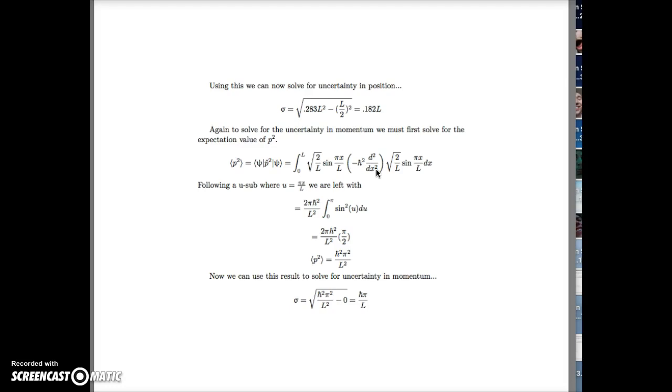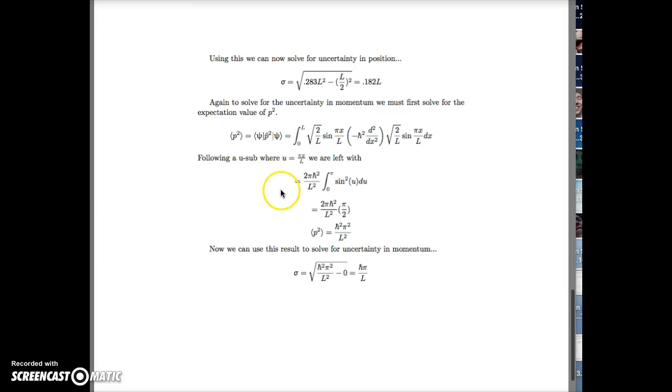Again, to solve for the uncertainty in momentum, we must first solve for the expectation value of p squared. Following the same process, doing another u-substitution where u equals pi x over L, we're left with this. Plugging in our bounds, we find that the expectation value of p squared is h-bar squared pi squared over L squared. Now we can use this result to solve for uncertainty in momentum and we get h-bar pi over L.